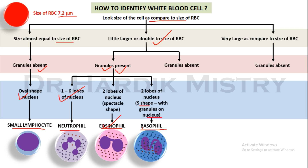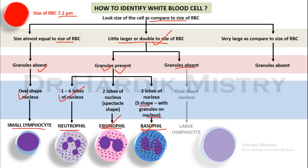If you find a cell which is little larger or double to the size of RBC, granules present, and 2 lobes of the nucleus arranged in S shape with granules overlying the nucleus, that cell is basophil. If you find a cell which is little larger or double to the size of RBC, granules are absent, and the nucleus is oval in shape, then this cell is the large lymphocyte.